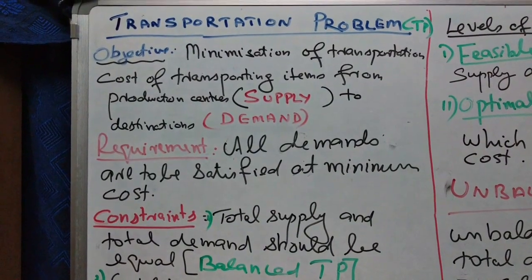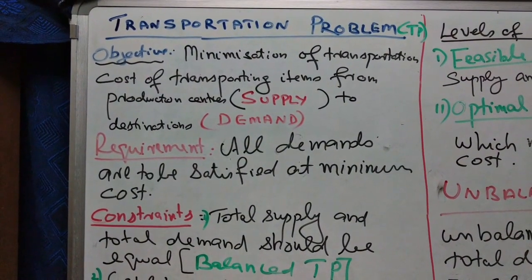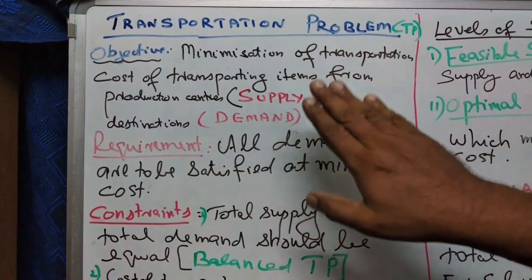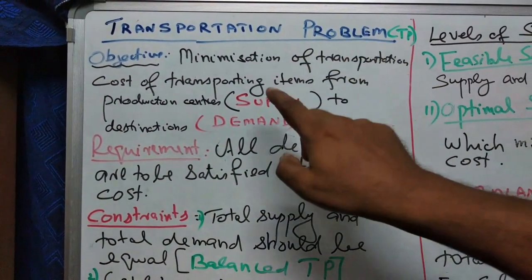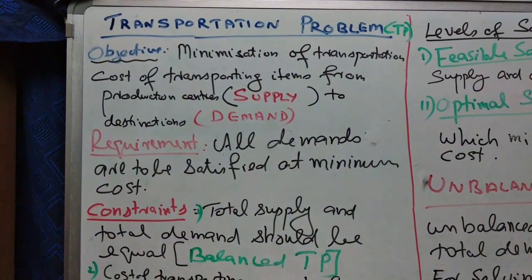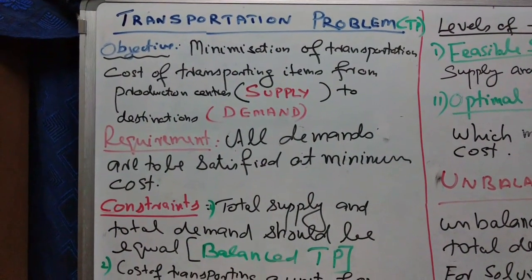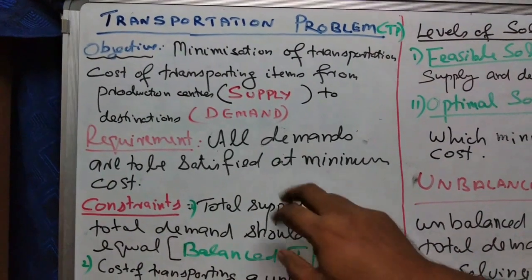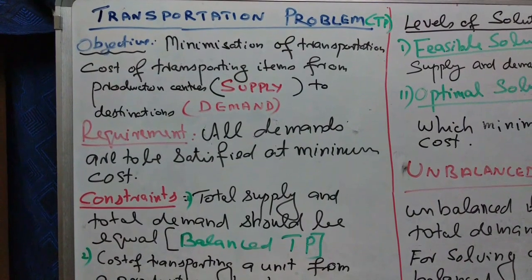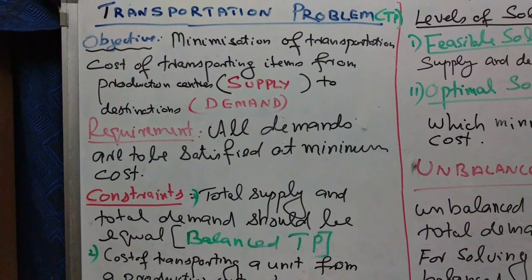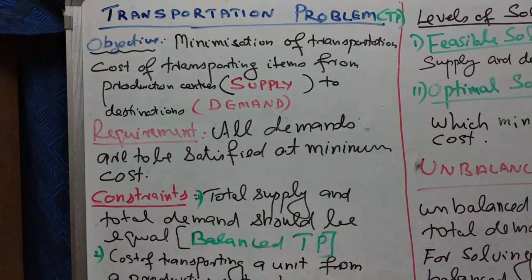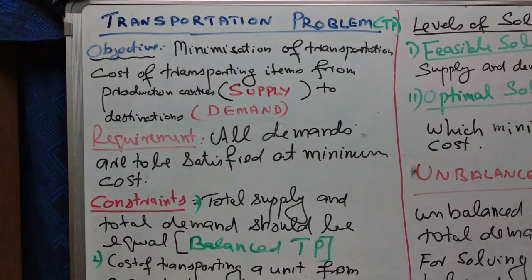Where the items are produced is the supply centers; where the items are demanded is the demand sectors. We have two sectors, namely supply sector and demand sector, and the prime objective is to minimize the cost of transporting units from supply centers to demand sectors. The first condition is all demands are to be satisfied at minimum cost.